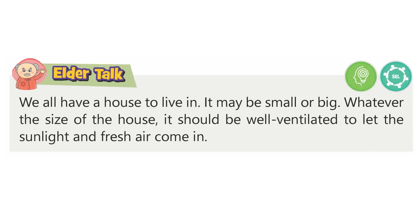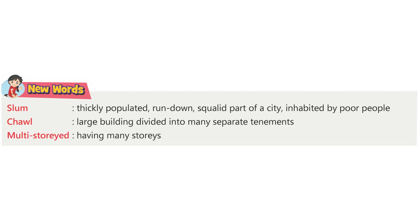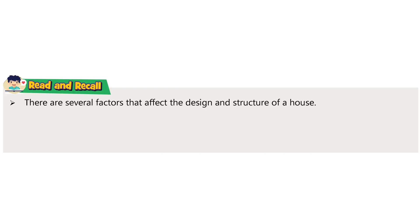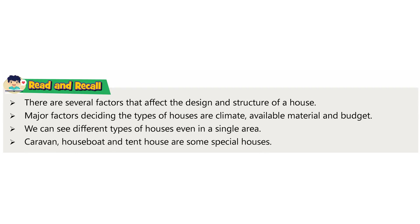Elder talk: We all have a house to live in. It may be small or big. Whatever the size of the house, it should be well ventilated to let the sunlight and fresh air come in. New words — Slum: a thickly populated, run-down, squalid part of a city inhabited by poor people. Chawl: a large building divided into many separate tenements. Multi-storied: having many stories. Read and recall: There are several factors that affect the design and structure of a house. Major factors deciding the types of houses are climate, available material, and budget. We can see different types of houses even in a single area. Caravan, houseboat, and tent house are some special houses.